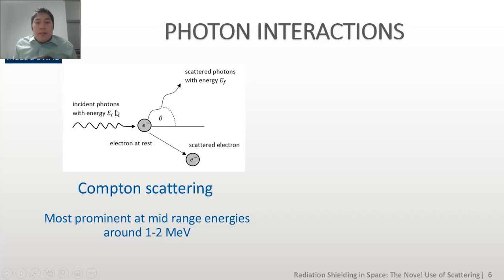Third, we have Compton scattering where a photon with energy Ei strikes a stationary electron and then moves at an angle theta to the horizontal, known as the scattering angle, with an energy Ef where Ef is less than Ei. The scattered electron moves at another angle such that the vector sum of the change in momentum of the entire system is zero. Compton scattering occurs mostly for incident photon energy Ei ranging between 1 to 2 mega electron volts.